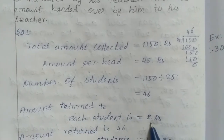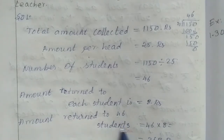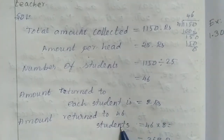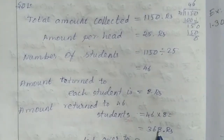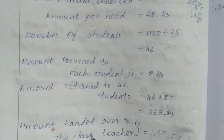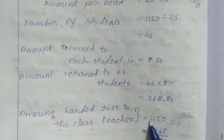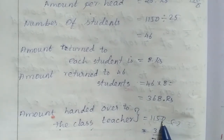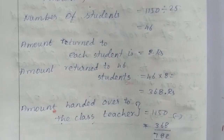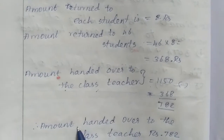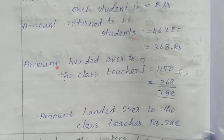The amount returned to each student is 8 rupees. So 46 students receive 8 rupees each: 46 × 8 = 368 rupees returned. The amount handed over to the class teacher is the total collected minus amount returned, which equals 368 rupees handed over to the teacher.